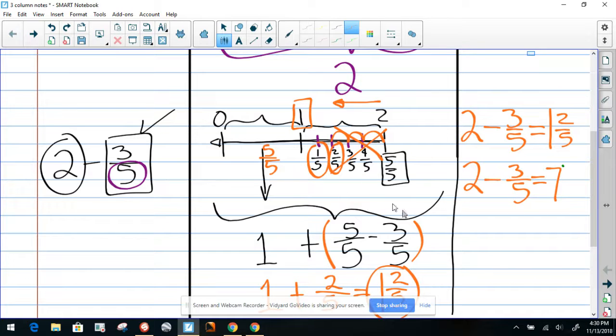So it's going to be 7, let me fix the seven here a little, 7/5. So that will be your improper fraction.